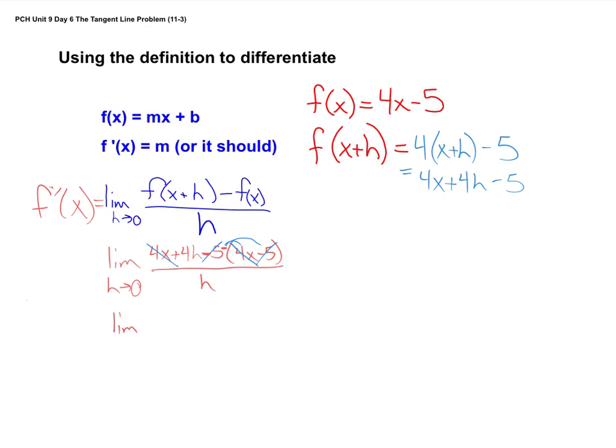So we've got the limit as h approaches 0 of 4h over h. And now I can cancel the h's. One nice thing about this whole process here is this. Okay? Every time you do this, the stuff that doesn't have h's should cancel out. Okay? At least for the ones we're doing right now. We're just going to do some basic ones with polynomials.